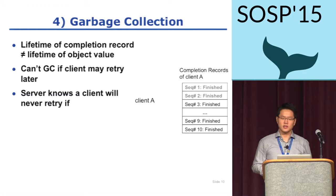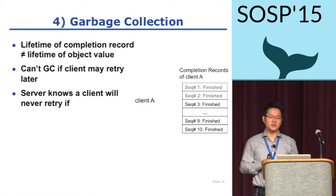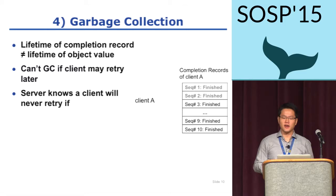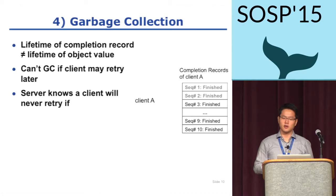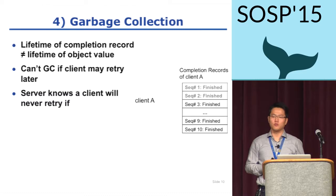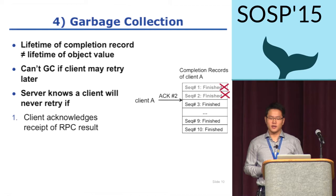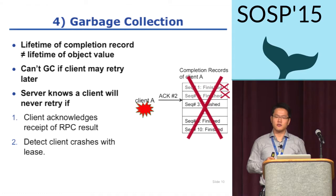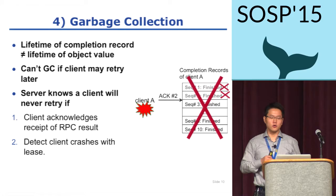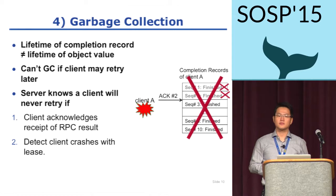Finally, we want to reclaim space for completion records eventually. Interestingly, the lifetime of a completion record is not the same as the lifetime of object values, since retries can still arrive after an object value has been updated by another client. Therefore, we must retain the completion record if there is a possibility of clients retrying the RPC. There are two cases where a server is sure a client will not retry: first, a client actively acknowledges receipt of RPC results and promises not to retry by piggybacking the acknowledgement on RPC requests; second, a server detects a client crash using a lease-based mechanism. All alive clients maintain their own leases, and as a lease expires due to a client crash, servers delete all completion records for the crashed client.